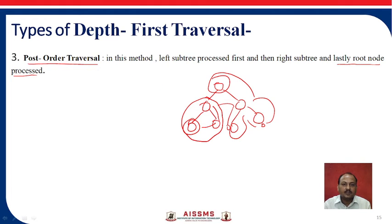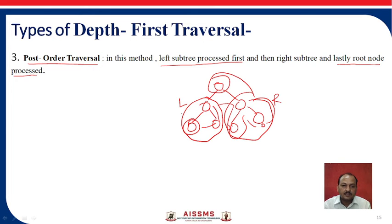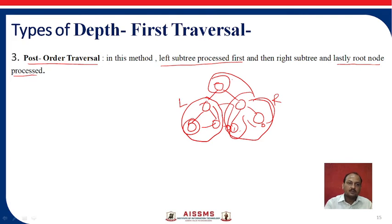According to the post-order definition: left subtree is processed first, then the right subtree is processed, and at last you process the root node. This is the third type of depth first traversal — post-order traversal.